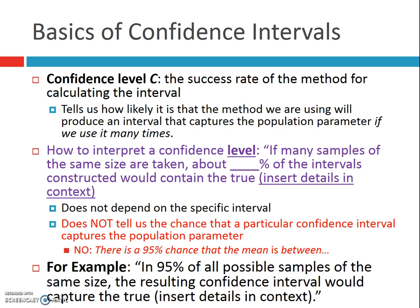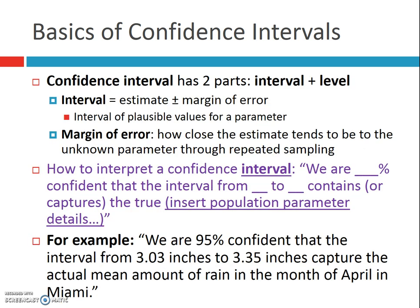In 95% of all possible samples of the same size, the resulting confidence interval would capture the true parameter — that's a good sentence starter to memorize when interpreting the level. Now, what is a confidence interval? It has two parts: the actual interval itself, and the level. The interval is calculated with two pieces of information — you start with the point estimate, and then you add and subtract the margin of error. The interval gives you a range of plausible values, things we wouldn't be surprised to be true, for a parameter. The margin of error tells you how close the estimate tends to be to the unknown parameter through repeated sampling.